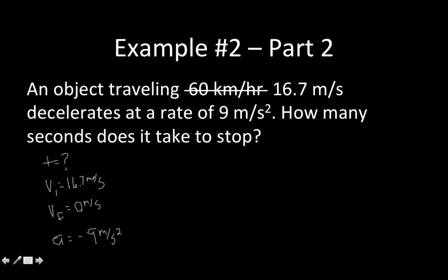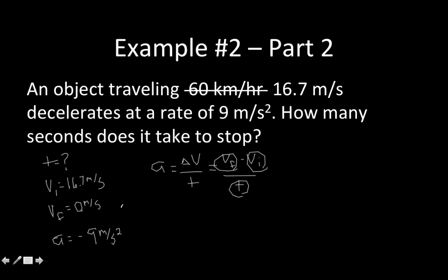Which equation are we going to use to figure out time? None of the equations I've given you directly solve for time. So we need to take one of the equations we've talked about in the past and do a little algebra. Remember, acceleration equals the change in velocity divided by the change in time, which is the same as final velocity minus initial velocity, all over time. We have initial velocity, final velocity, and acceleration — we just have to rearrange to solve for time.